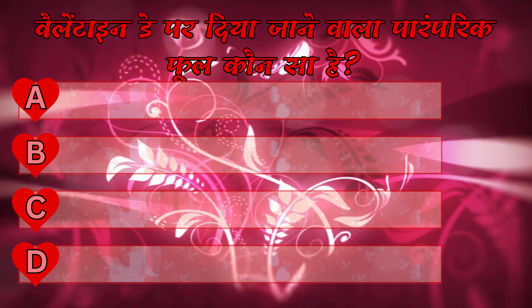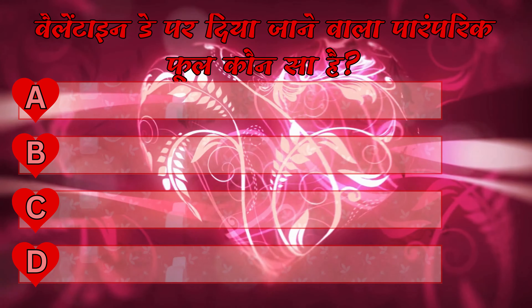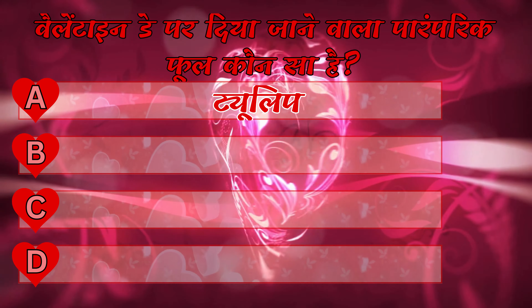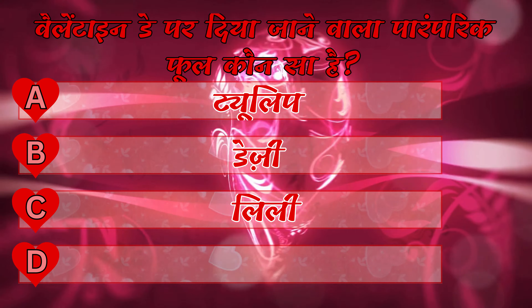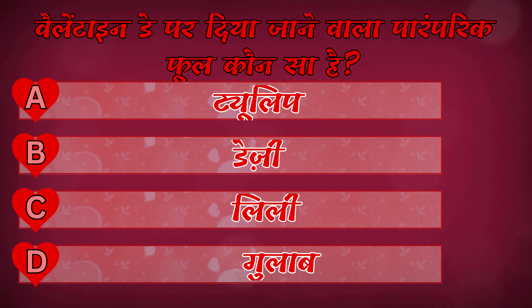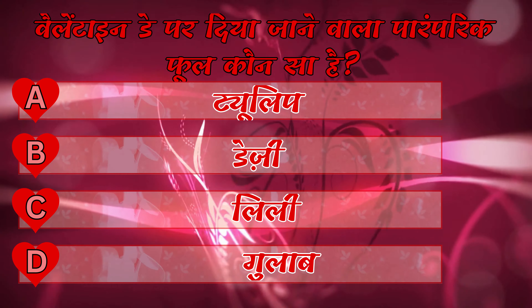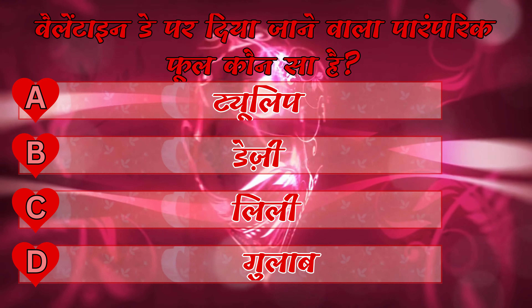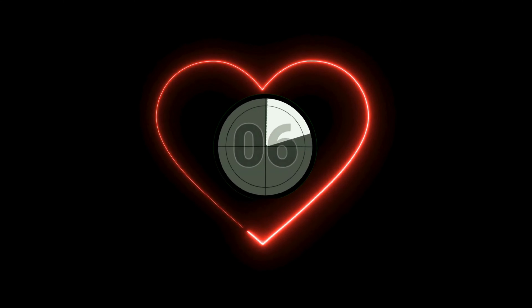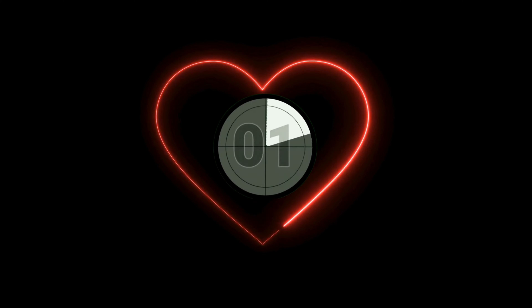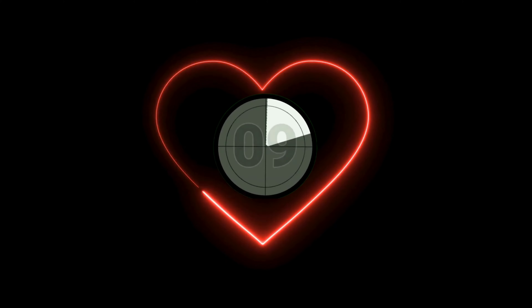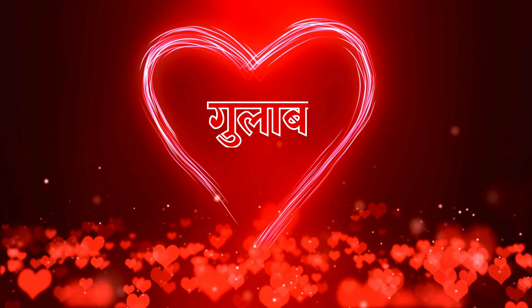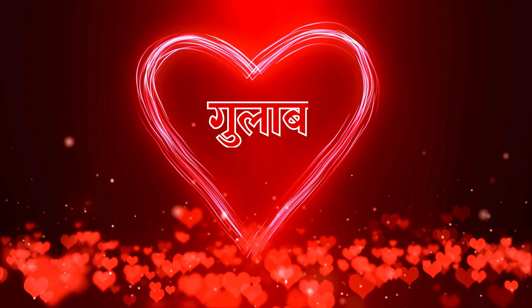वेलेंटाइन डे पर दिया जाने वाला पारंपरिक फूल कौन सा है? A. जूलिप, B. डेजी, C. लिली, D. गुलाब. आपका जवाब होगा उत्तर D. गुलाब.